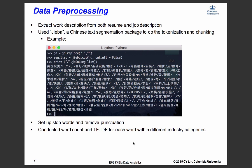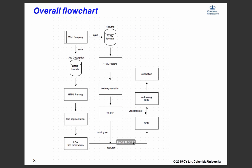Here is the overall workflow chart: I get the data online, save it as HTML into MySQL, do HTML parsing for both resumes and job descriptions, perform text segmentation, use LDA to find topic words, get the TF-IDF from the resumes, put those into the training set, fit a gradient boosting model, use a validation set to retrain the GBM, and finally evaluate the result.